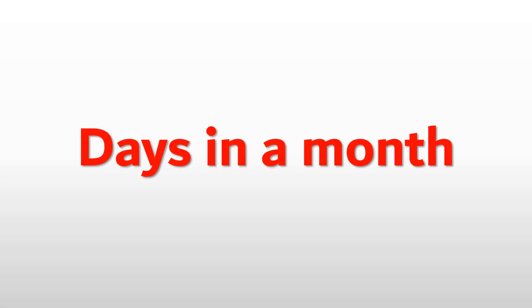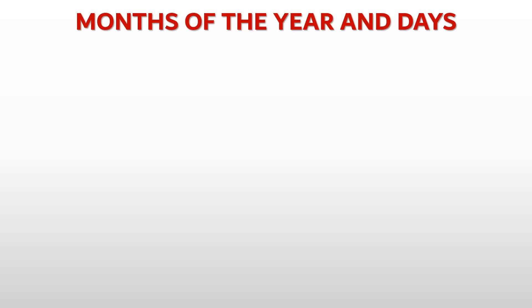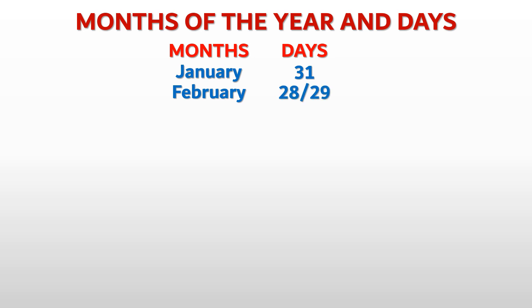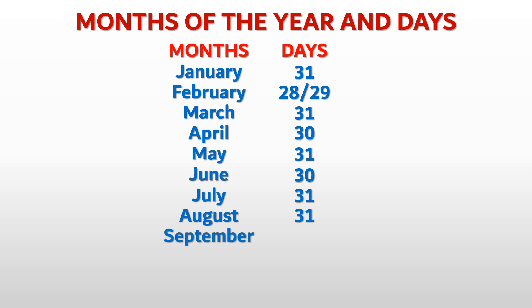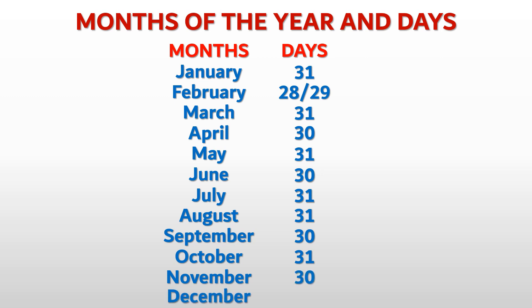Days in a month — months of the year and days. January has 31 days, February has 28 or 29 days, March has 31 days, April has 30 days, May has 31 days, June has 30 days, July has 31 days, August has 31 days, September has 30 days, October has 31 days, November has 30 days, and December has 31 days.